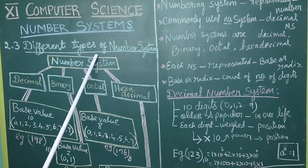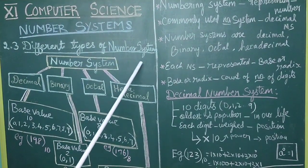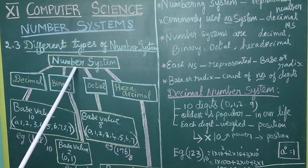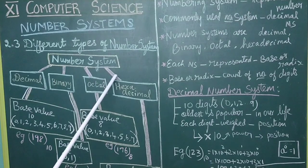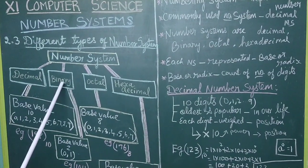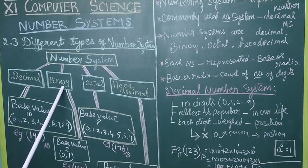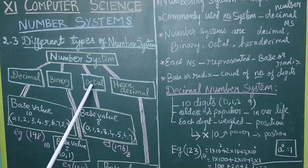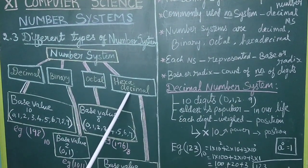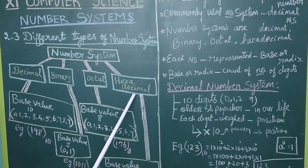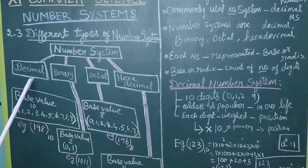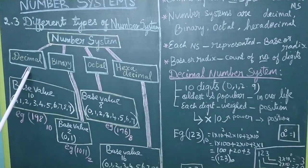Different types of number systems. The types of number systems are: decimal number system, binary number system, octal number system, and hexadecimal number system. We will first see about the decimal number system.